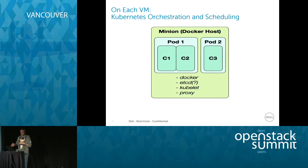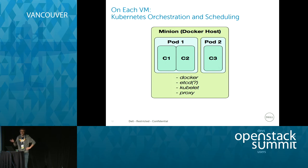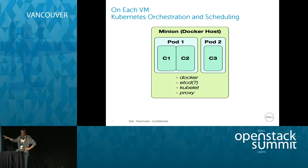Kubernetes breaks things down into pods that allow you to create associations — say between a web server, an app server, and a database server. You could have those three containers all associated with each other in a pod and replicate those pods across minions. ETCD is a highly reliable key-value store that provides Kubernetes the overview of what's going on — all nodes are constantly checking in their data into the local ETCD and that information is being replicated throughout the cluster.